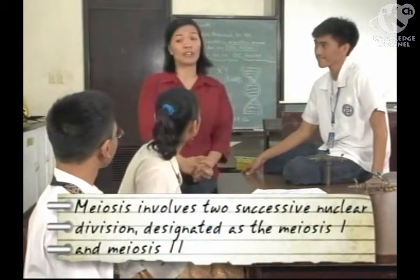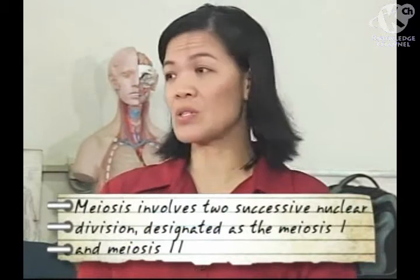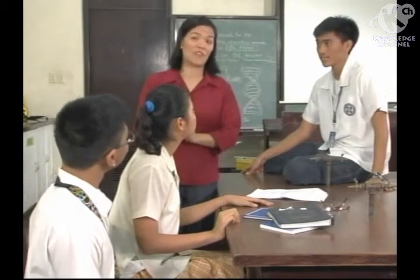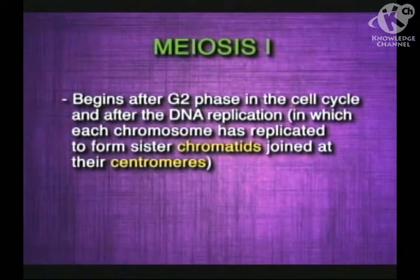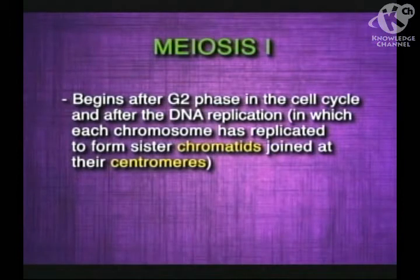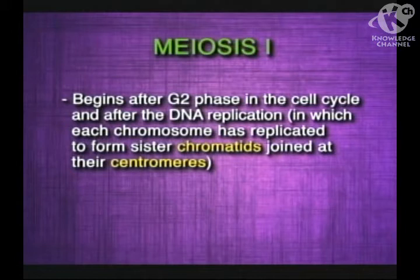Like mitosis, meiosis is a continuous process. Meiosis involves two successive nuclear divisions, namely meiosis I and meiosis II. Each nuclear division has these stages: prophase, metaphase, anaphase, and telophase — the same phases as mitosis. Meiosis I begins after the G2 phase in the cell cycle and after DNA replication, in which each chromosome is replicated to form sister chromatids joined at their centromeres.